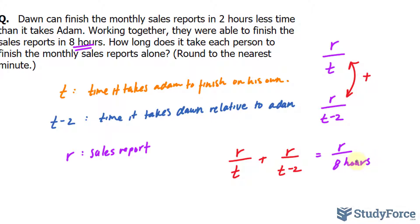Of course, we don't need to write down hours once we start to solve. So adding up the rate of Adam plus the rate of Dawn gives us the amount of reports produced per eight hours.